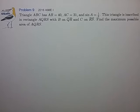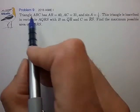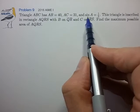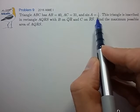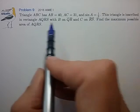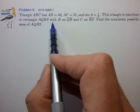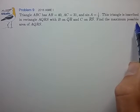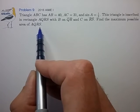Hi, this is problem 9 from the 2016 AIME I. Triangle ABC has AB = 40, AC = 31, and sin A = 1/5. This triangle is inscribed in rectangle AQRS with B on QR and C on RS. Find the maximum possible area of AQRS.